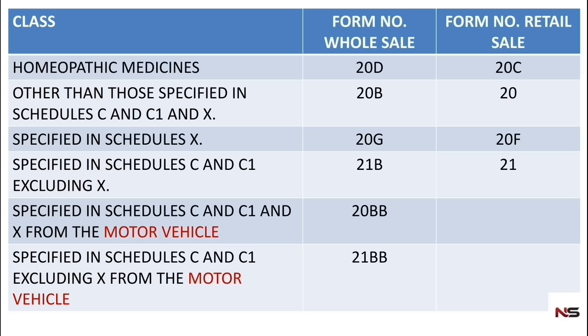This is the form number for different classes of drugs. You can see in the first column different classes, second column form number for wholesale, third column form number for retail sale. For homeopathic medicines, form number is 20D for wholesale and 20C for retail. For drugs other than those specified in schedule C, C1, and X, it's 20B for wholesale and 20 for retail. Drugs specified in schedule X: 20G for wholesale and 20F for retail.